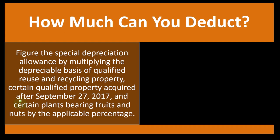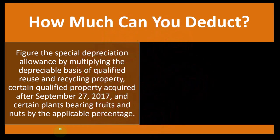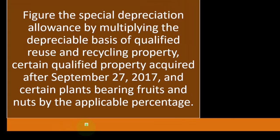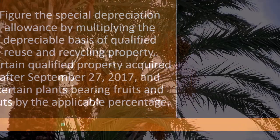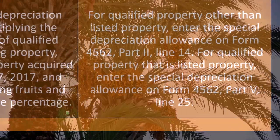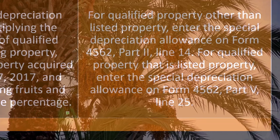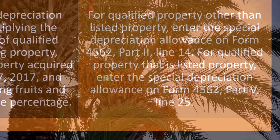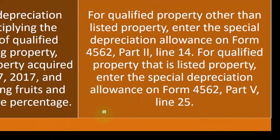How much can you deduct? Let's get down to the nitty and the gritty. Figure the special depreciation allowance by multiplying the depreciable basis of qualified reuse and recyclable property, certain qualified property acquired after September 27, 2017, and certain plant-bearing fruits and nuts by the applicable percentage. For qualified property other than listed property, enter the special depreciation allowance on Form 4562 — Part 2, Line 14.